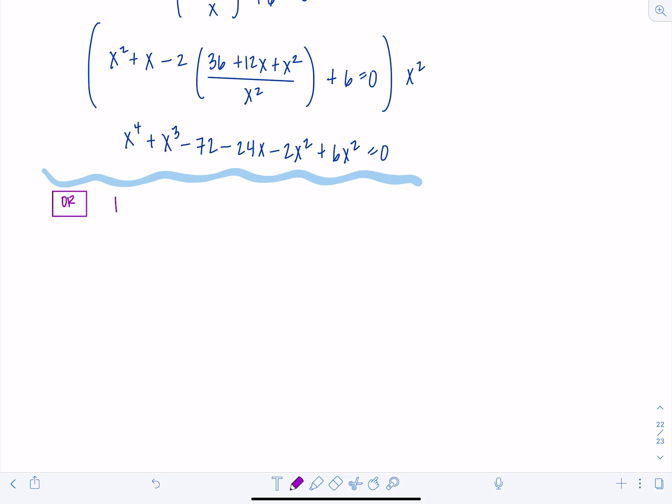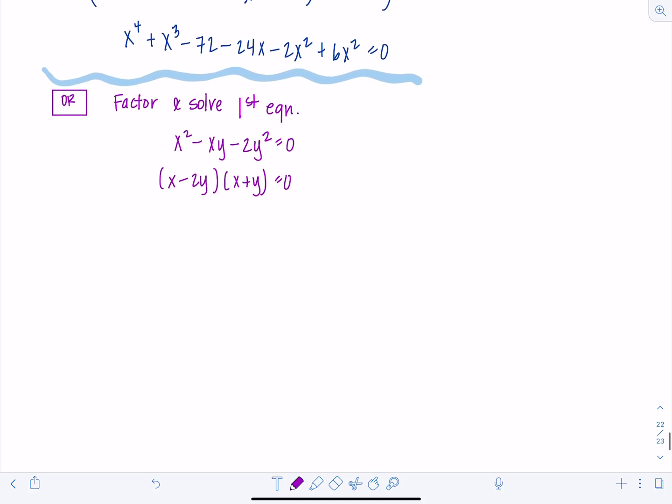Or you factor and solve the first equation. Yes, it factored. So the first equation was x squared minus xy minus 2y squared is zero. So you can factor this. You're going to have x minus 2y times x plus y is zero. Oh my goodness. Which means that you get x in terms of y. X is either 2y or x is negative y. But this isn't bad because remember your second equation was xy plus x plus six is zero. So you can just substitute these values in to the other equation.